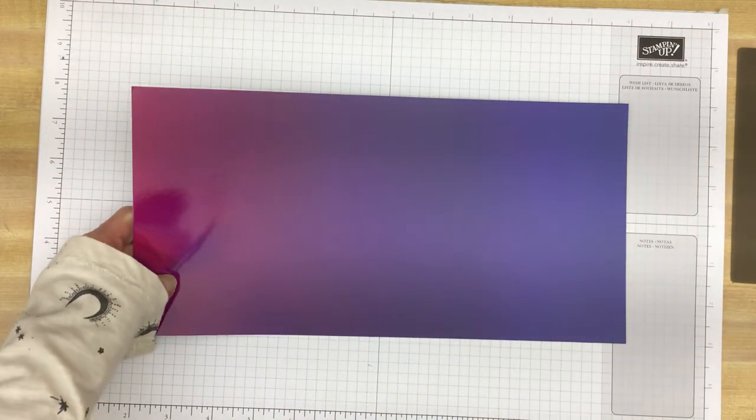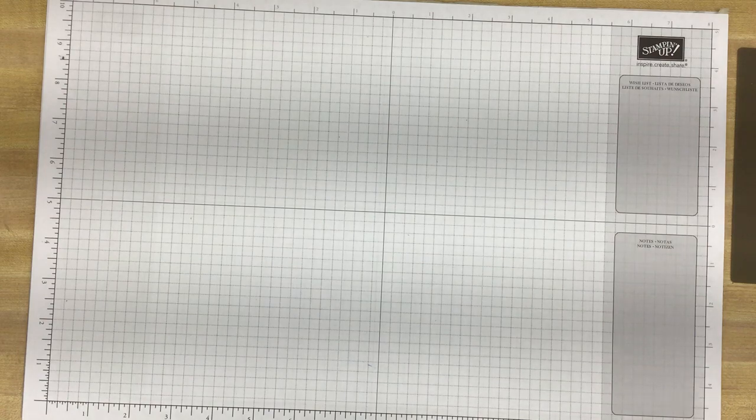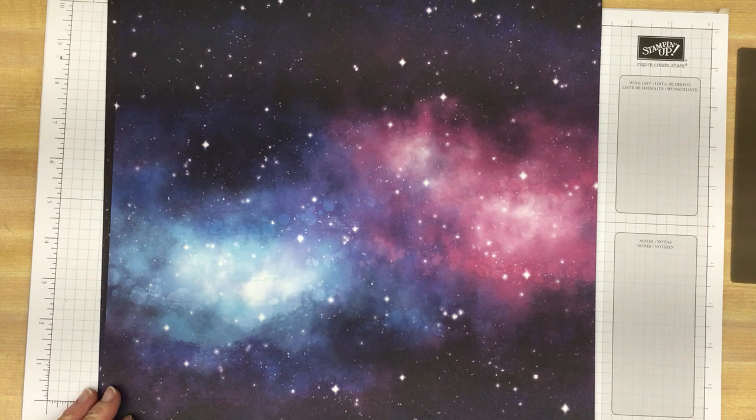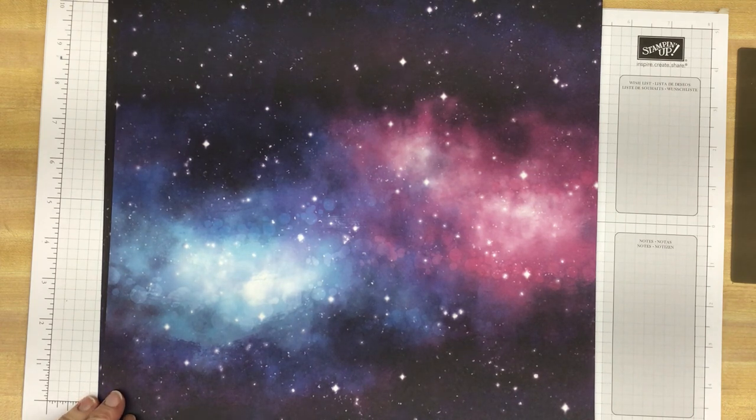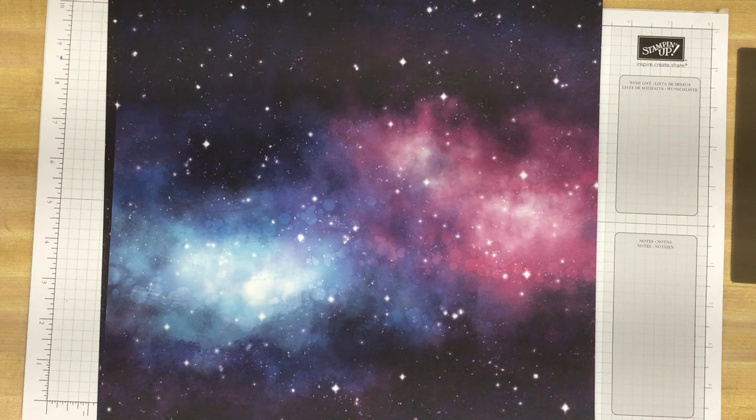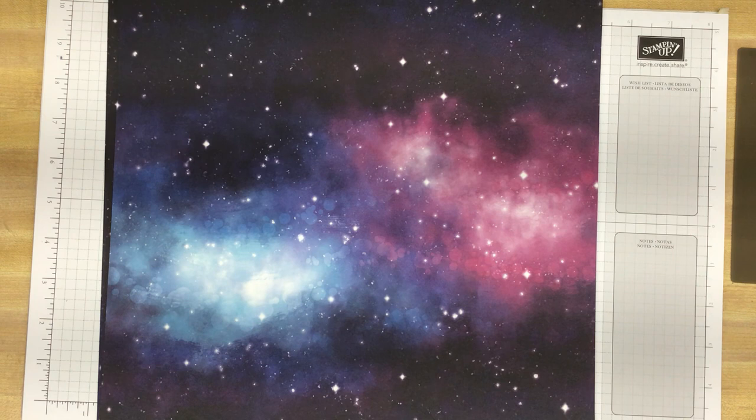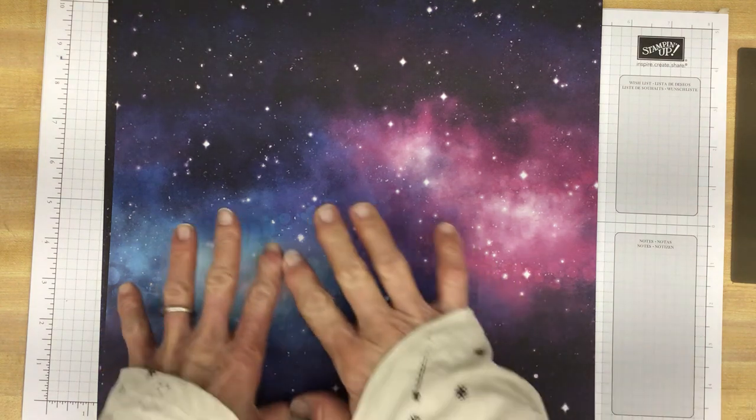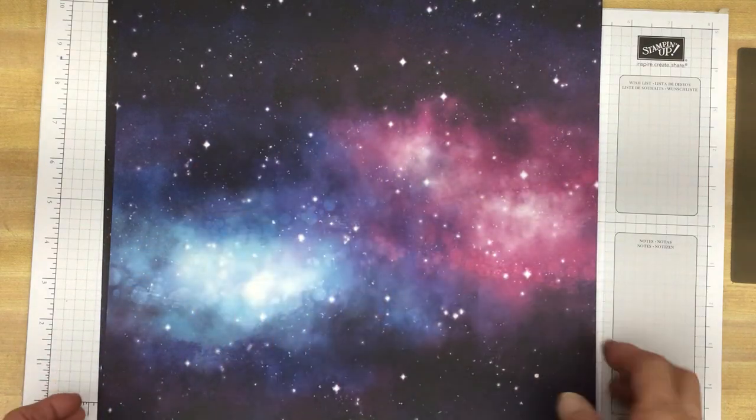Then the designer series paper. Here it is. I really like it. It's 12 by 12. And the colors included in this, there are so many. There's basic black, berry burst, blackberry bliss, blueberry bushel, crushed curry, flirty flamingo, fresh freesia, lemon lime twist, night of navy, orchid oasis, pumpkin pie, starry sky, and tahitian tide. But I like these designs. The galaxy looking designs. It makes it really easy to make a space themed card.